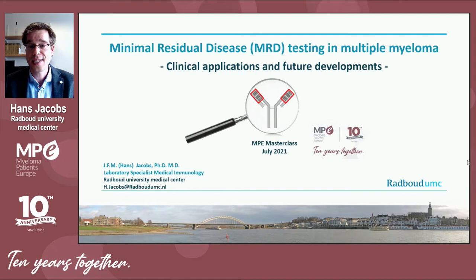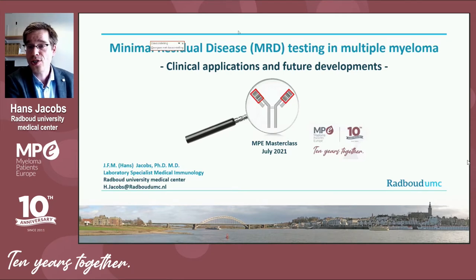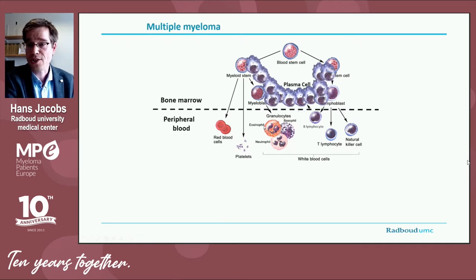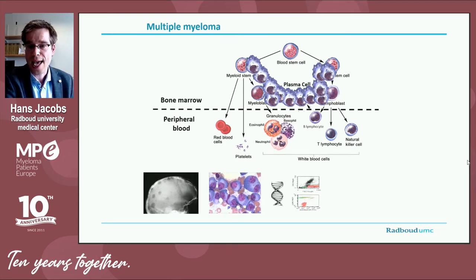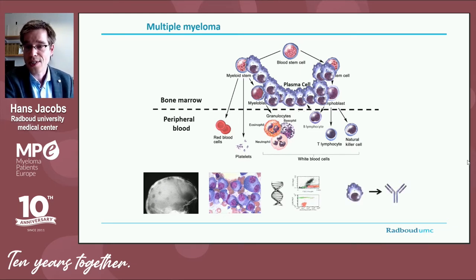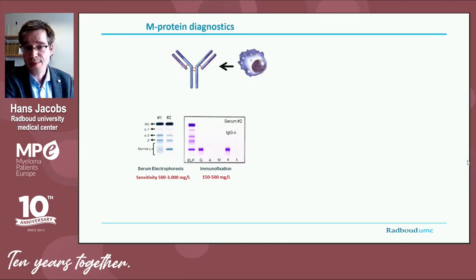It is well known that multiple myeloma is caused by a clonal expansion of plasma cells in the bone marrow. In many patients, the diagnosis is rather straightforward with a characteristic anamnesis. A bone marrow biopsy can visualize the abnormal clonal plasma cells, imaging may identify characteristic lytic lesions, and cytogenetics can provide a prognostic profile. In addition to that, the clonal plasma cells secrete a unique biomarker, namely a monoclonal antibody.